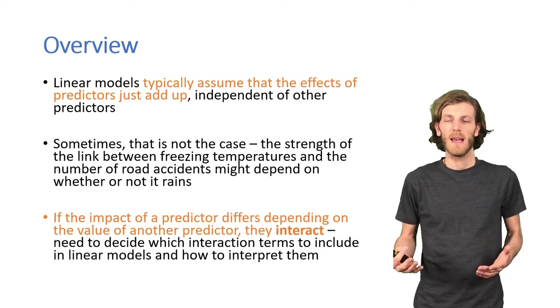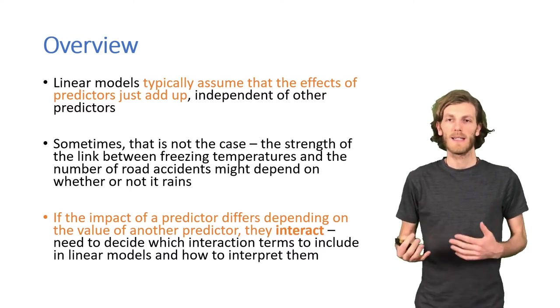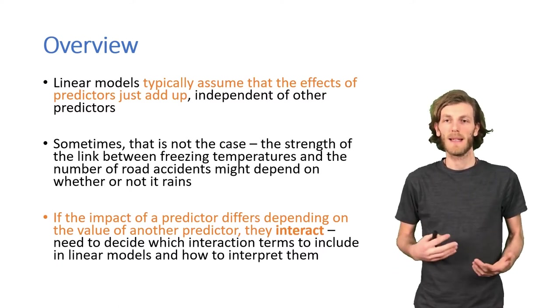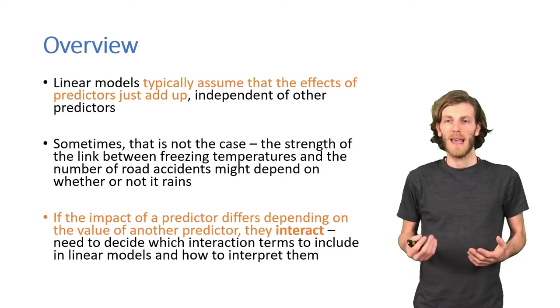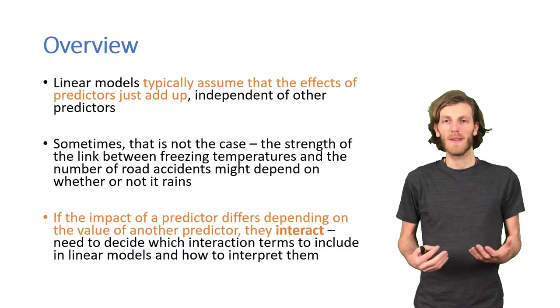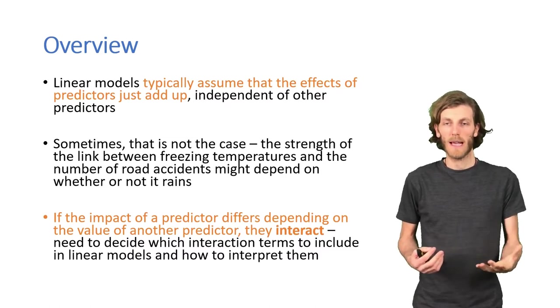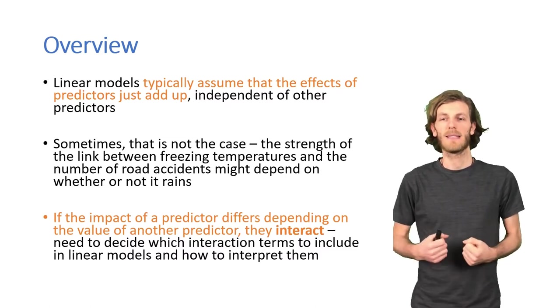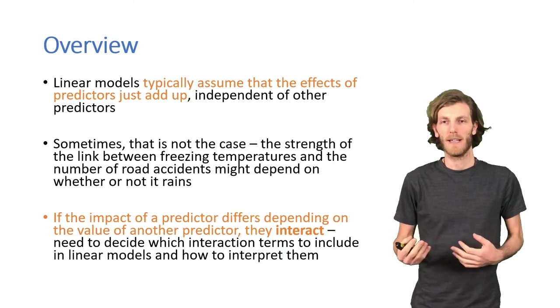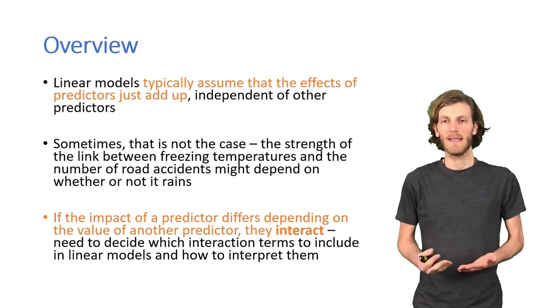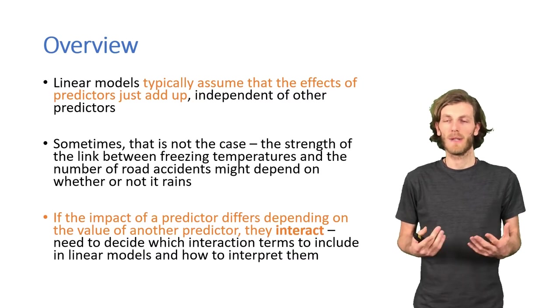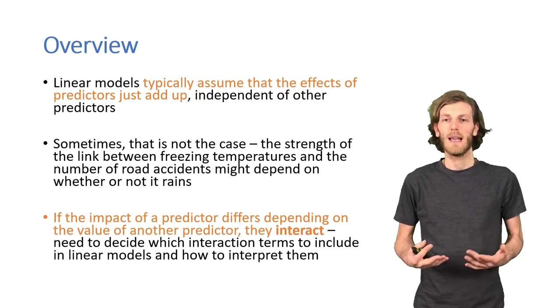If it's cold outside, whether or not that leads to more accidents depends on whether or not it rains at the same time. So, if the impact of one variable, the amount of rainfall, depends on another variable, the temperature, then we can say that those two variables interact. And that's something we need to account for explicitly in our linear models.